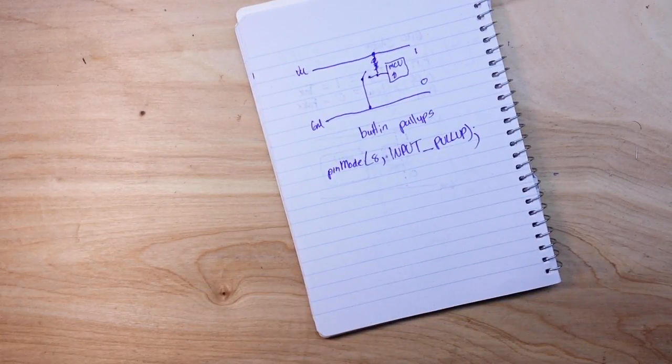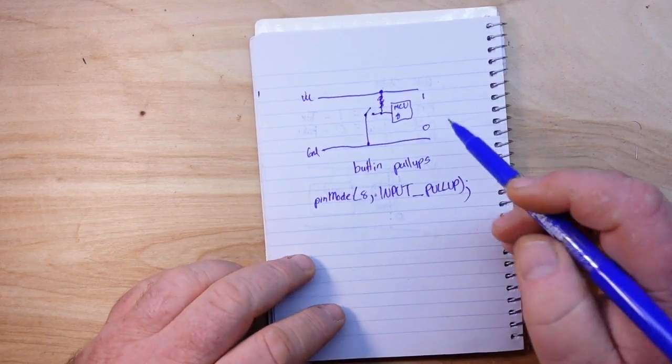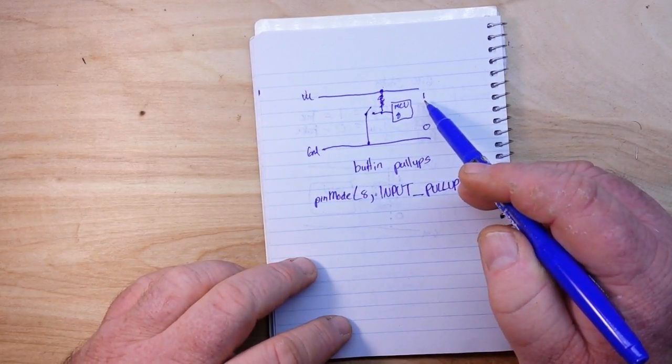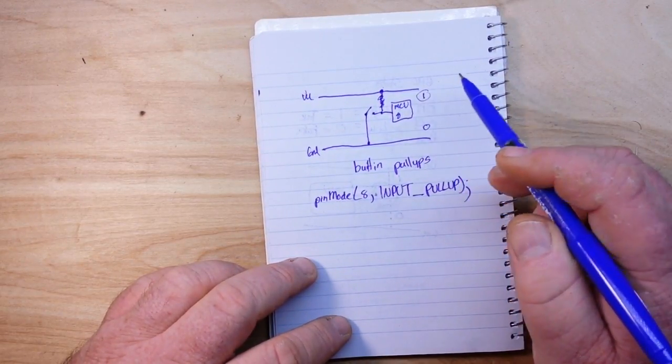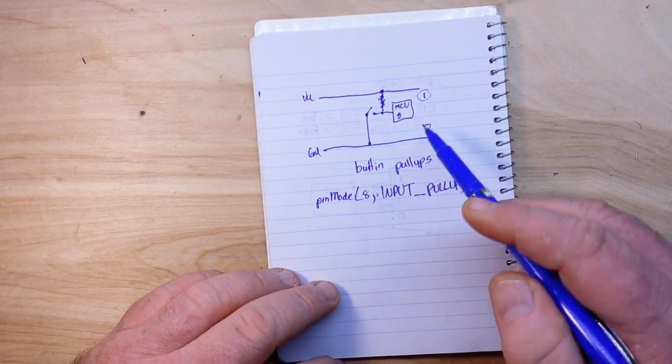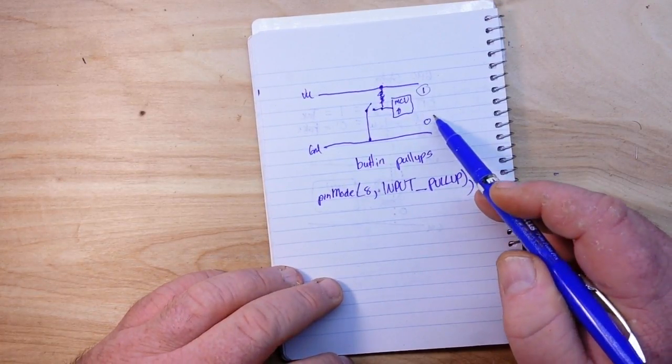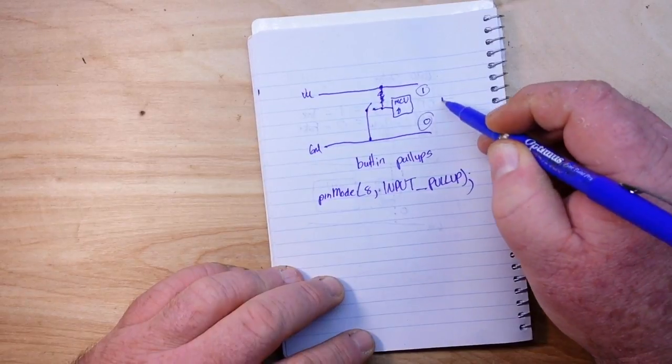But the strange thing about that is, remember we're pulling it up, so it's always reading one when the switch is disconnected, and when we press the switch, when we connect it, we're getting a zero.